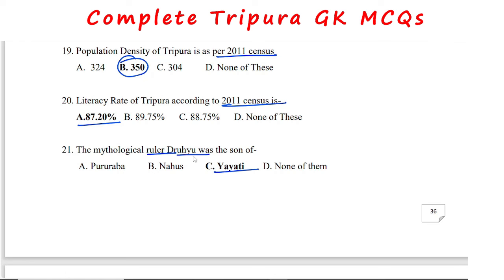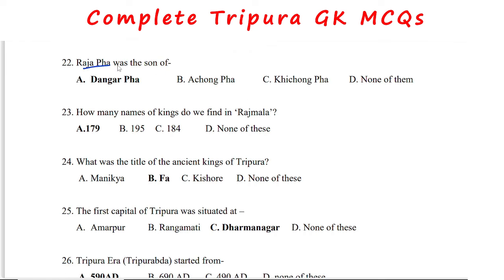The mythological ruler Dru was the son of Jajoti. Rajapa was the son of Dangarapa. The number of kings mentioned in the Rajmala is a debated figure — either 179 or 184.